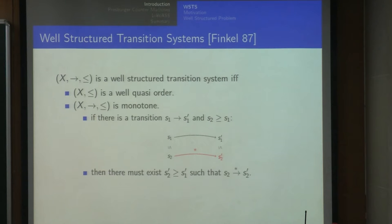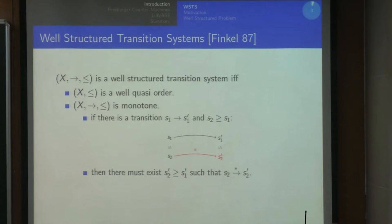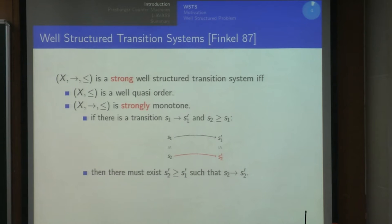The first condition is that the ordering needs to be a well quasi-order. The second is called the monotony condition: if there's a transition from S1 to S1 prime and I start from some configuration bigger than S1, then I should be able to reach some configuration bigger than S1 prime. There is also a stronger condition called strong monotony, which requires it to be reachable in one step. These are respectively called the well-structured and the strong well-structured transition systems.